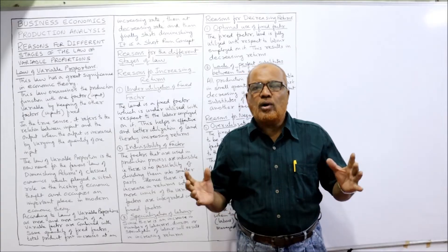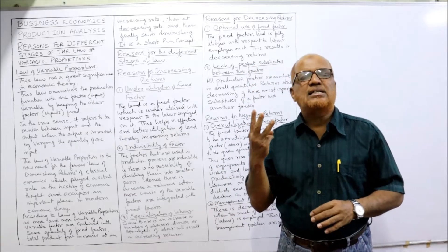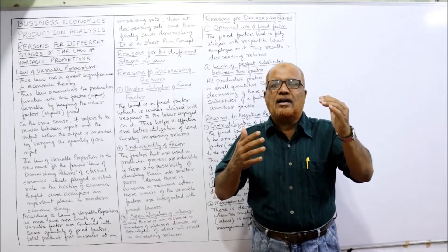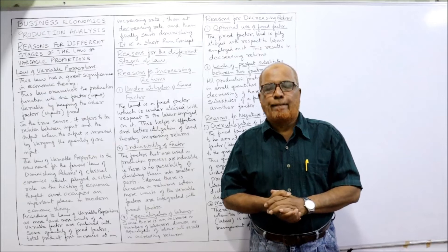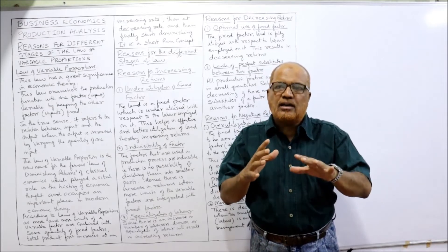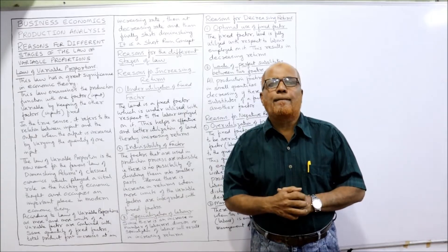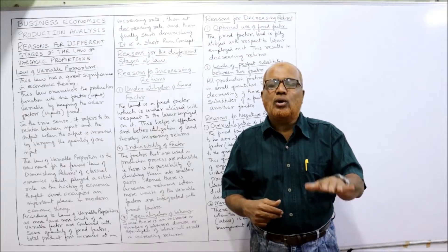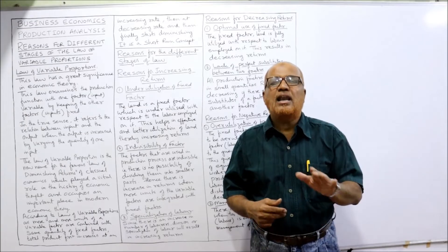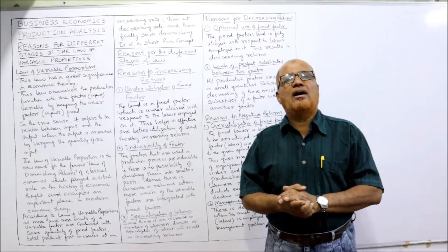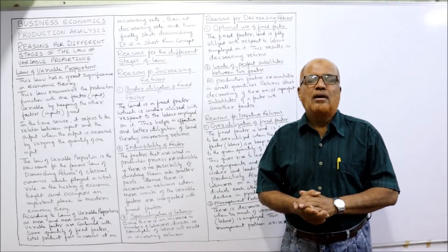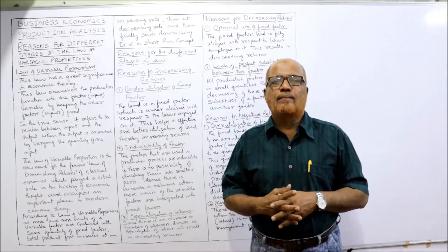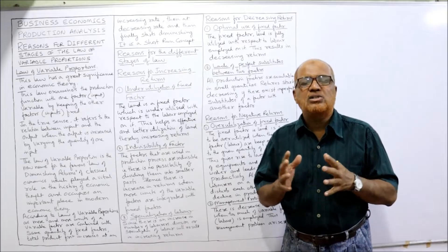We have already discussed that there are three stages in the law of variable proportions. The first stage: output is increasing at an increasing rate. The second stage: output is increasing but at a decreasing rate. The third stage: output is diminishing — instead of increasing, it is declining. In examination, a question will be asked about the reasons for these three stages.